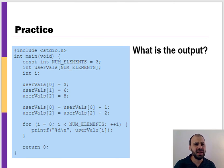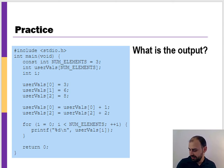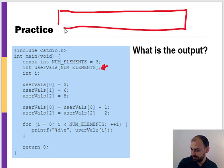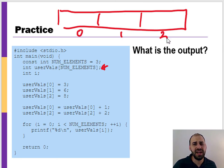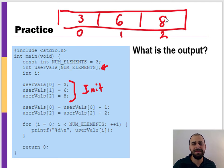Now let's look at a real example and interpret what the code is doing. We're creating an array called 'user_vowels' that has three elements — index zero, one, and two. We initialize it so that location zero has value 3, location one has value 6, and location two has value 8.